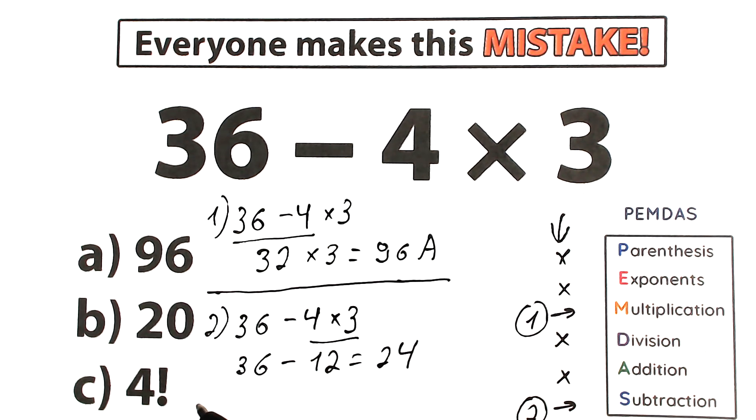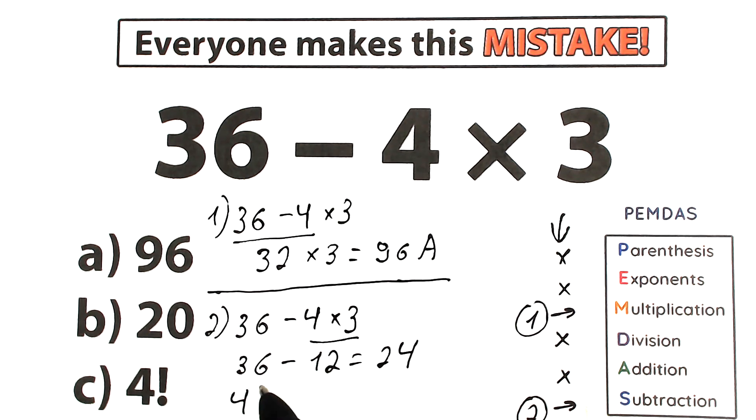Option A is 96, option B is 20, option C is 4 factorial. But let's look at this. 4 factorial, what is it?